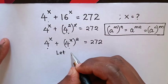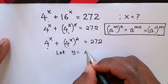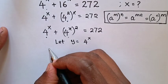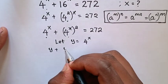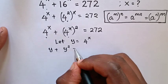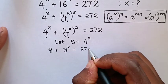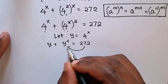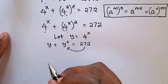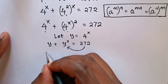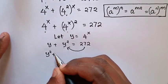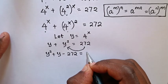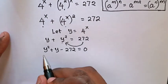We let y equal to 4 power x. So in our equation it becomes y plus y squared equals 272. Taking 272 to the left side, our equation becomes y squared plus y minus 272 equals 0.